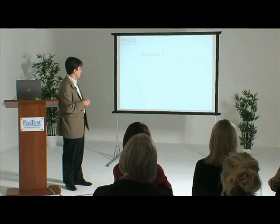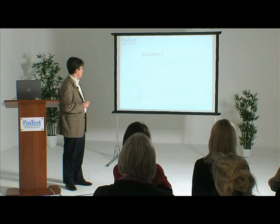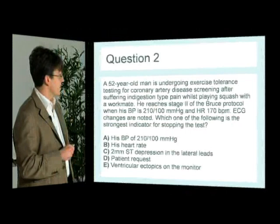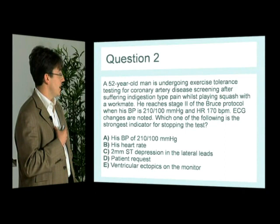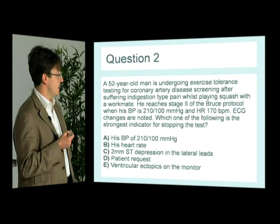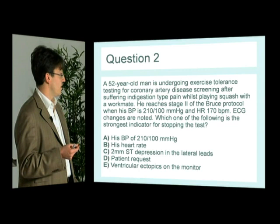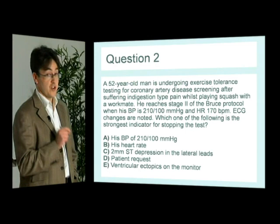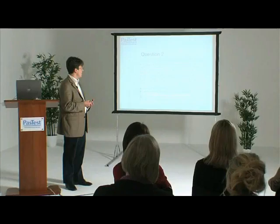Now moving on to question 2. A 52-year-old man is undergoing an exercise tolerance test for coronary artery disease screening after suffering indigestion-type pain whilst playing squash — a very common clinic presentation. He reaches stage 2 of the Bruce protocol when his blood pressure is 210 over 100 and his heart rate is 170. Some ECG changes are noted. Which of the following is the strongest indicator for stopping the test? The correct answer is C — a 2mm ST depression in the lateral leads.